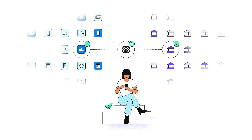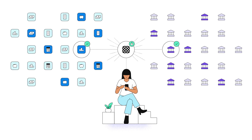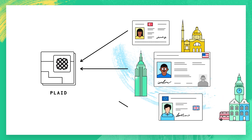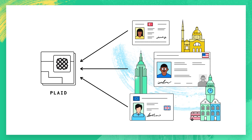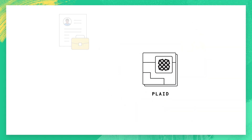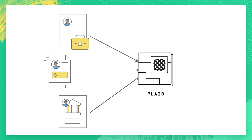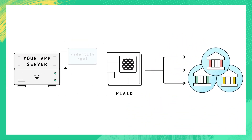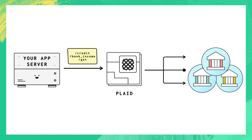Plaid provides you with a single set of endpoints that help you build powerful financial services — whether it's talking to identity verification sources around the world, retrieving income information from payroll providers, or connecting to thousands of banks on behalf of your users. Plaid will let you query and receive data in a consistent manner, so you can use it for everything from account verification to approving customers for lines of credit to building pretty great personal finance apps.